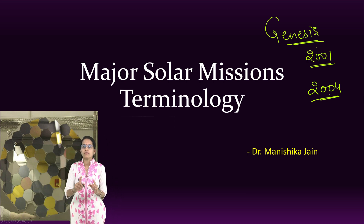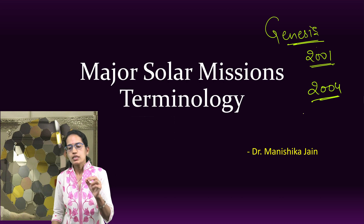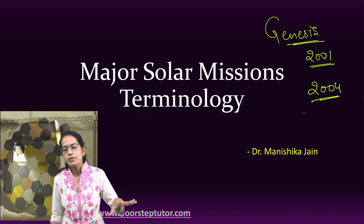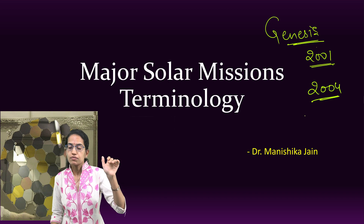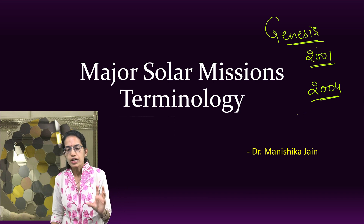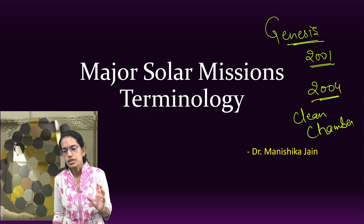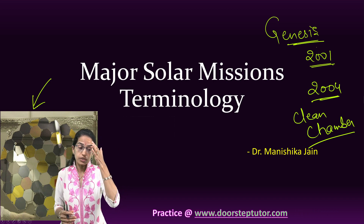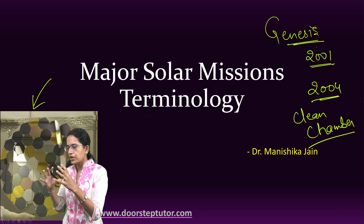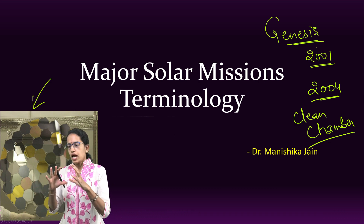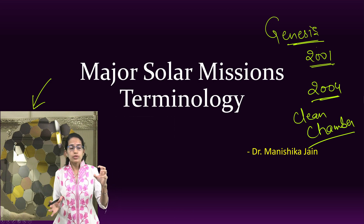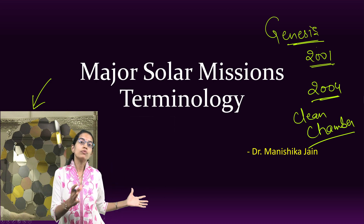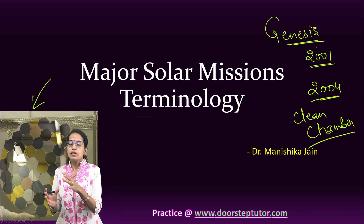When it was about to reach the surface of the Earth with the solar samples, it had an exposure with the upper atmosphere and the spacecraft crashed in the region of Utah. However, the clean chamber was still preserved. The clean chamber, as you can see in the sample here, has hexagonal structures — a comb-net structure which is tight — made up of ultra-pure semiconductors and high-grade wafers so that the samples brought from the solar wind remain intact and not exposed to Earth's atmosphere.